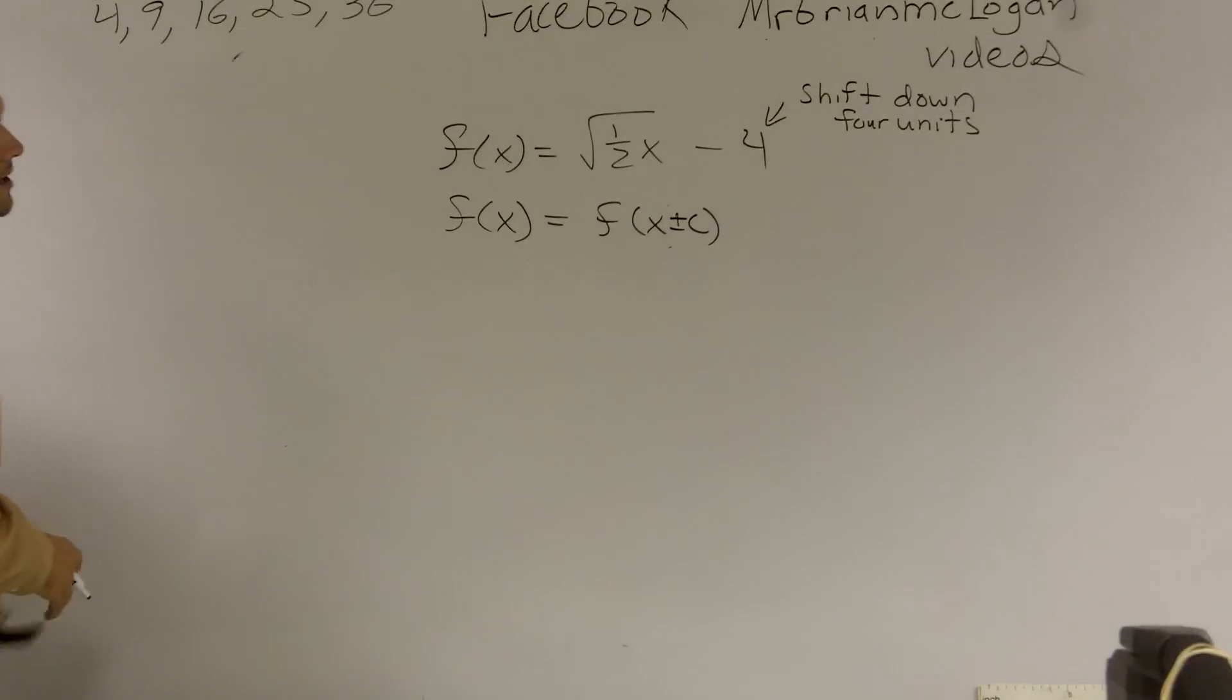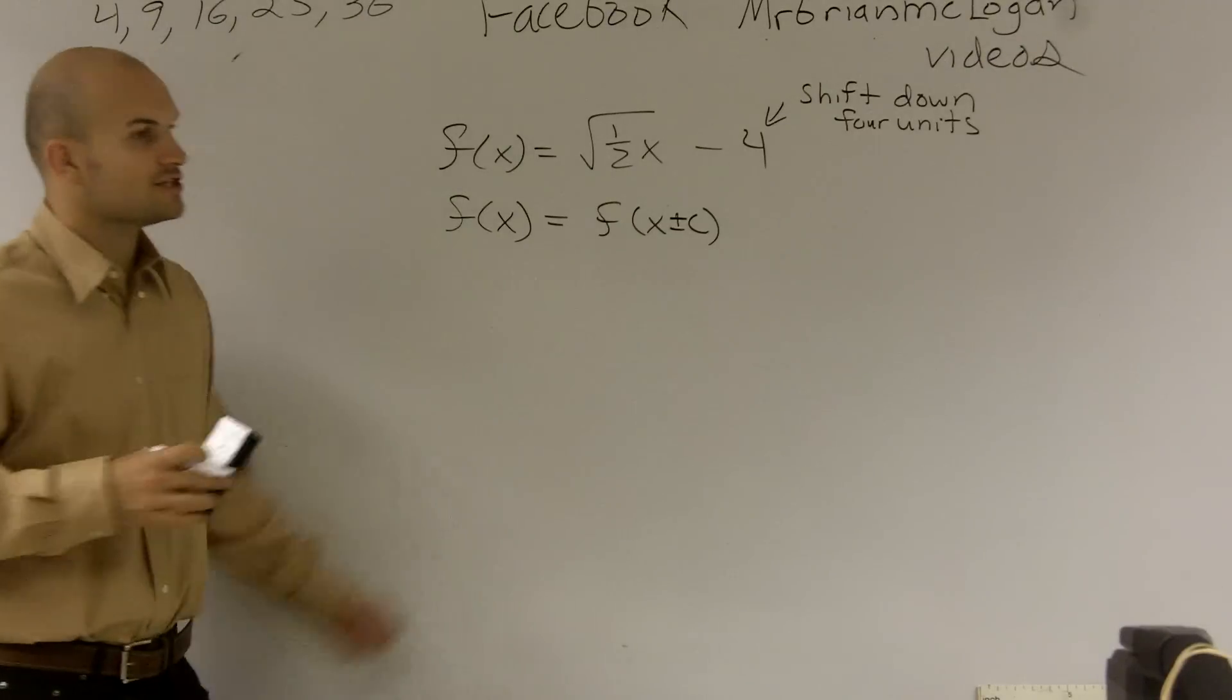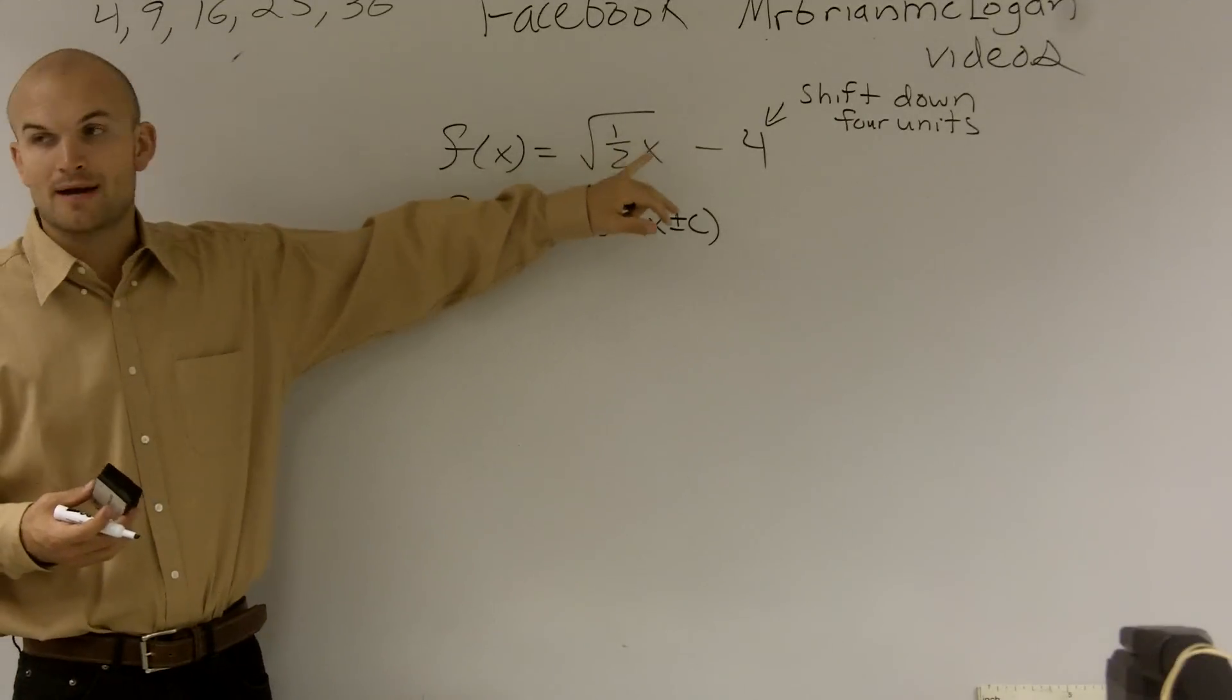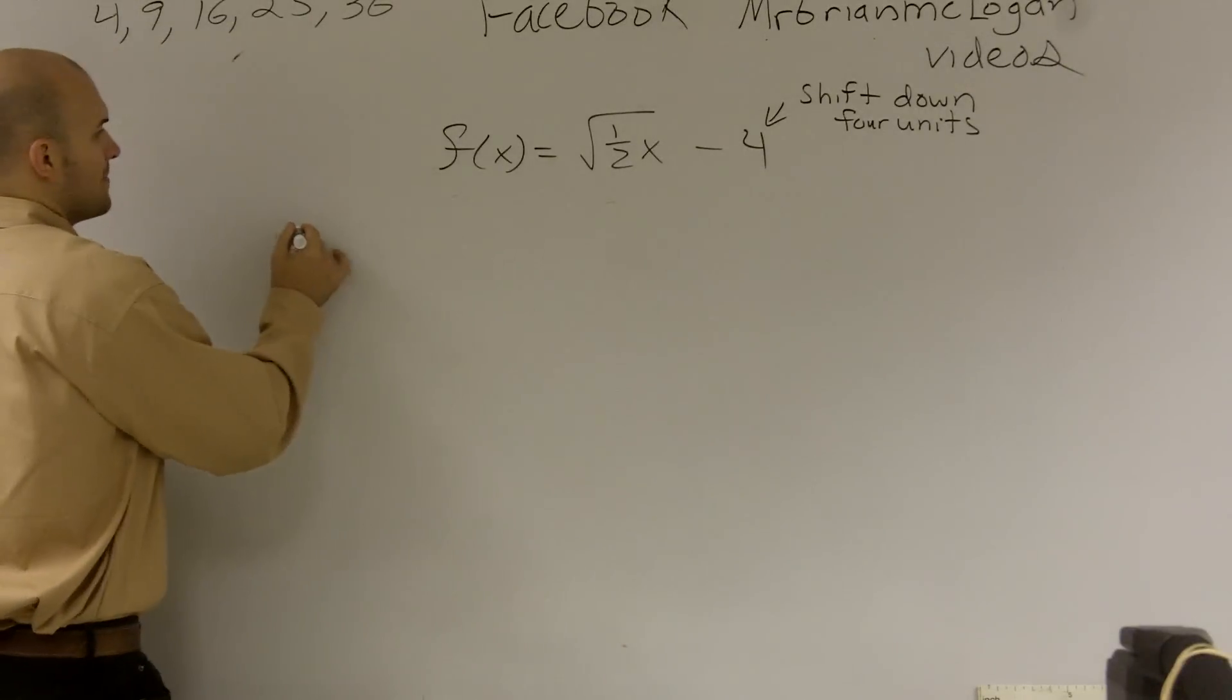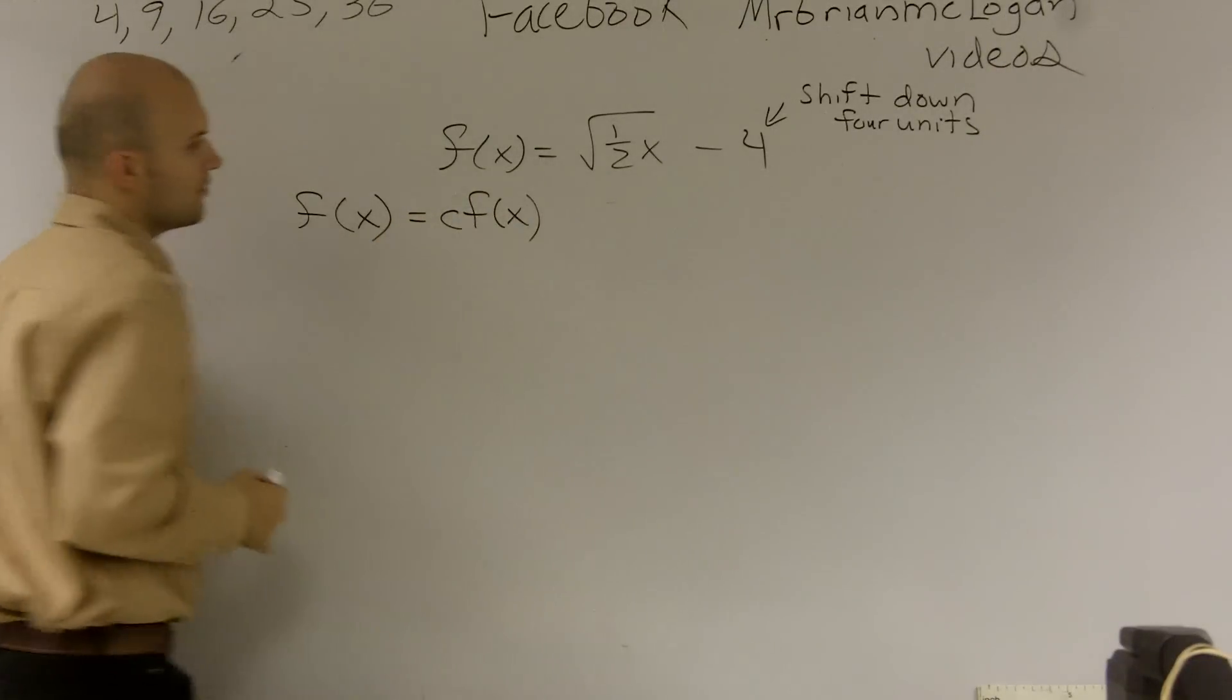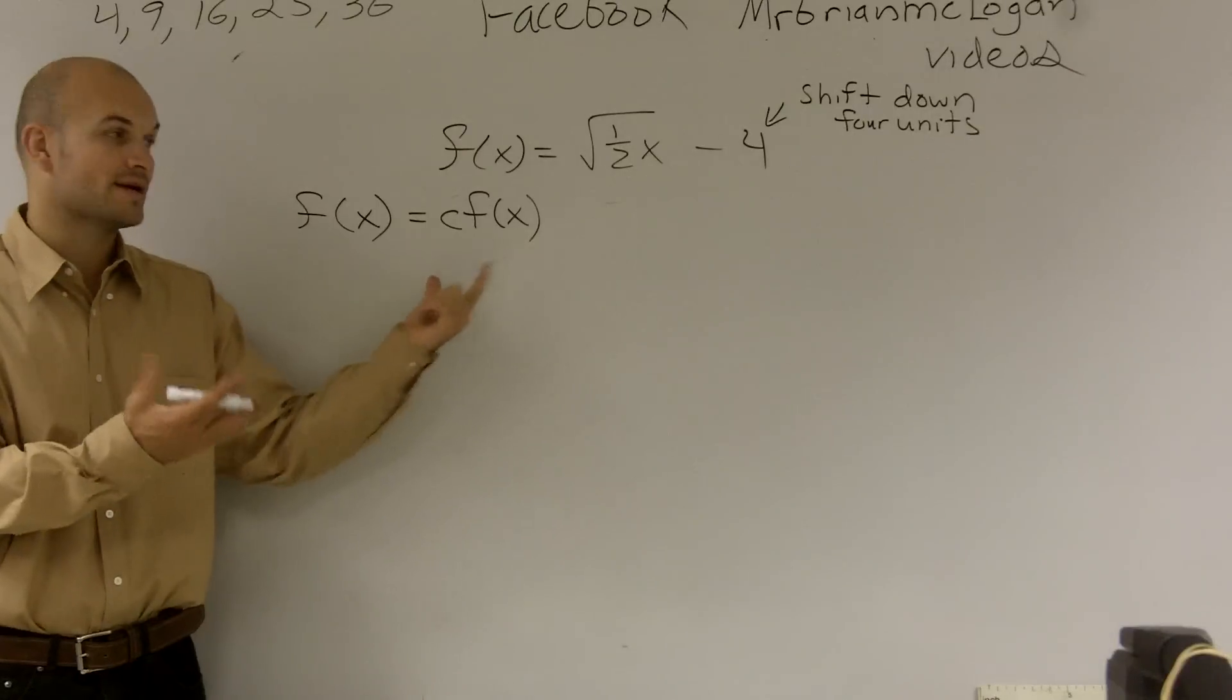So let's look at our next kind of transformation. This is going to be a non-rigid transformation. And what I mean by non-rigid is it's actually going to affect the shape of the graph. So what we look at is we have a number that's now multiplied by our x coordinate, our x value.